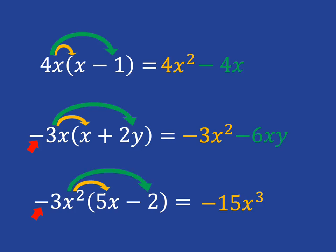And then you'll multiply negative 3x squared with negative 2, negative times negative is positive, 3 times 2 is 6, and so you'll have plus 6x squared.